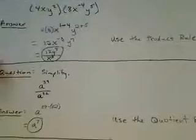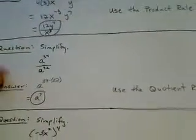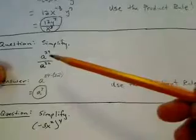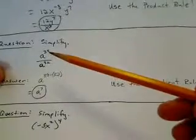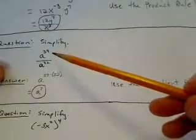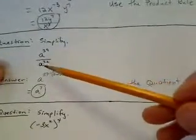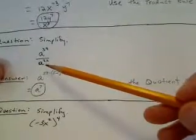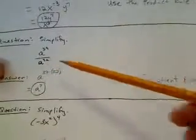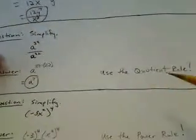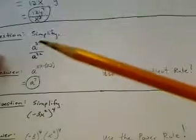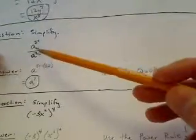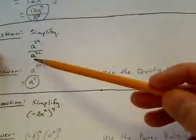Let's take a look at the quotient rule. The question says to simplify a raised to the 39th power in the numerator divided by a to the 32nd power in the denominator. In order to use the quotient rule, because this is a quotient, we have a numerator and denominator.